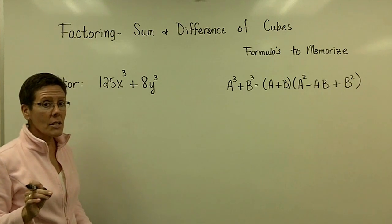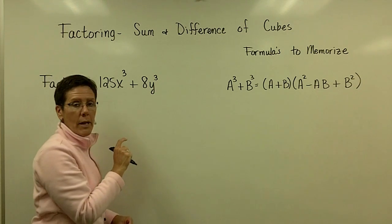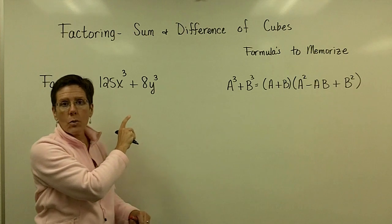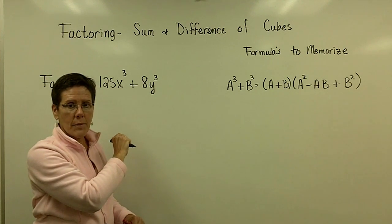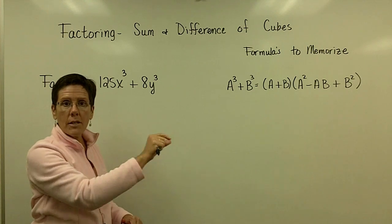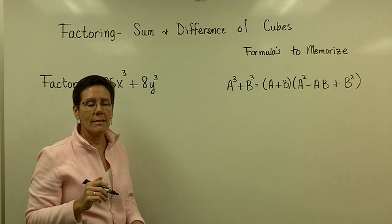The reason I know it's a cube is because this is raised to the third power, and that is raised to the third power. I also know if I took my calculator and found the cube root of 125, I would get 5, because 5 to the third power, or 5 times 5 times 5, is 125. And the cube root of 8 is the number 2.